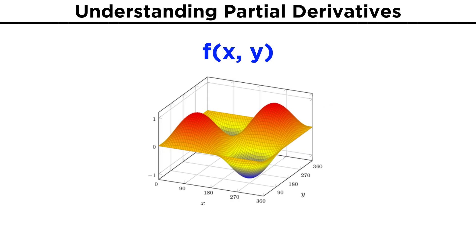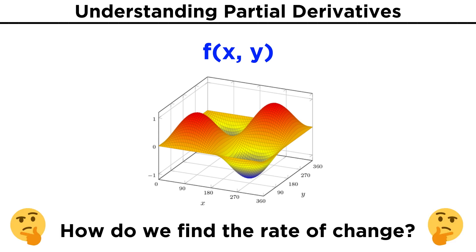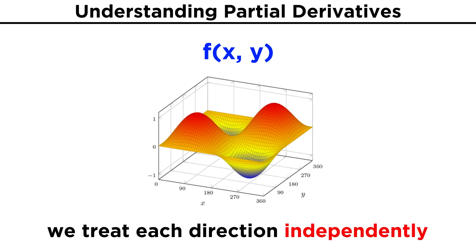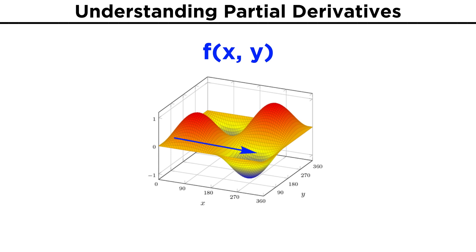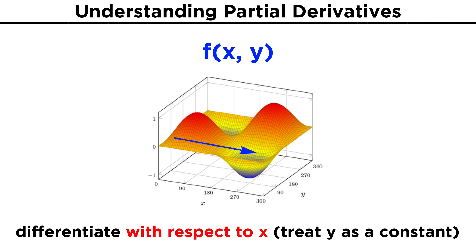Now, let's say we have a function that depends on both x and y, which we can call f of xy. This will end up being a surface in space rather than a curve, so how can we interpret the rate of change for this? What we end up having to do is to find the rate of change in specific directions independently. If we want the rate of change in the x direction, much like we have been doing already, we simply differentiate with respect to x while treating y as a constant. The new notation for this involves using these curvy d's instead of regular ones.